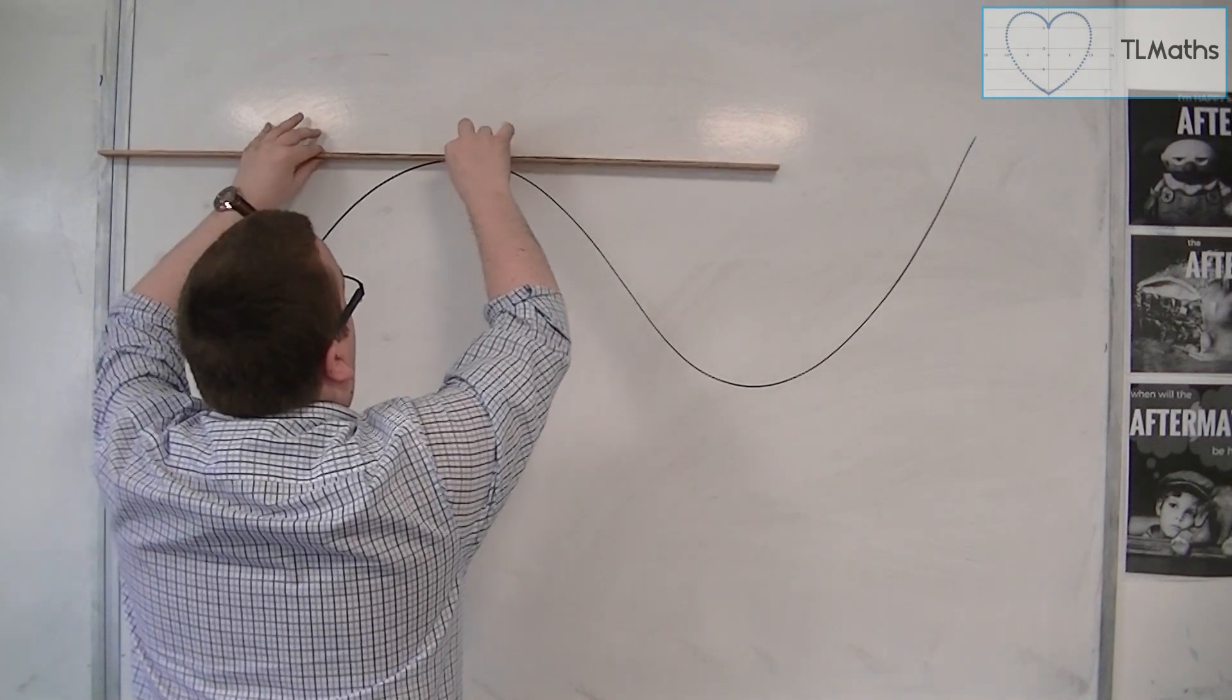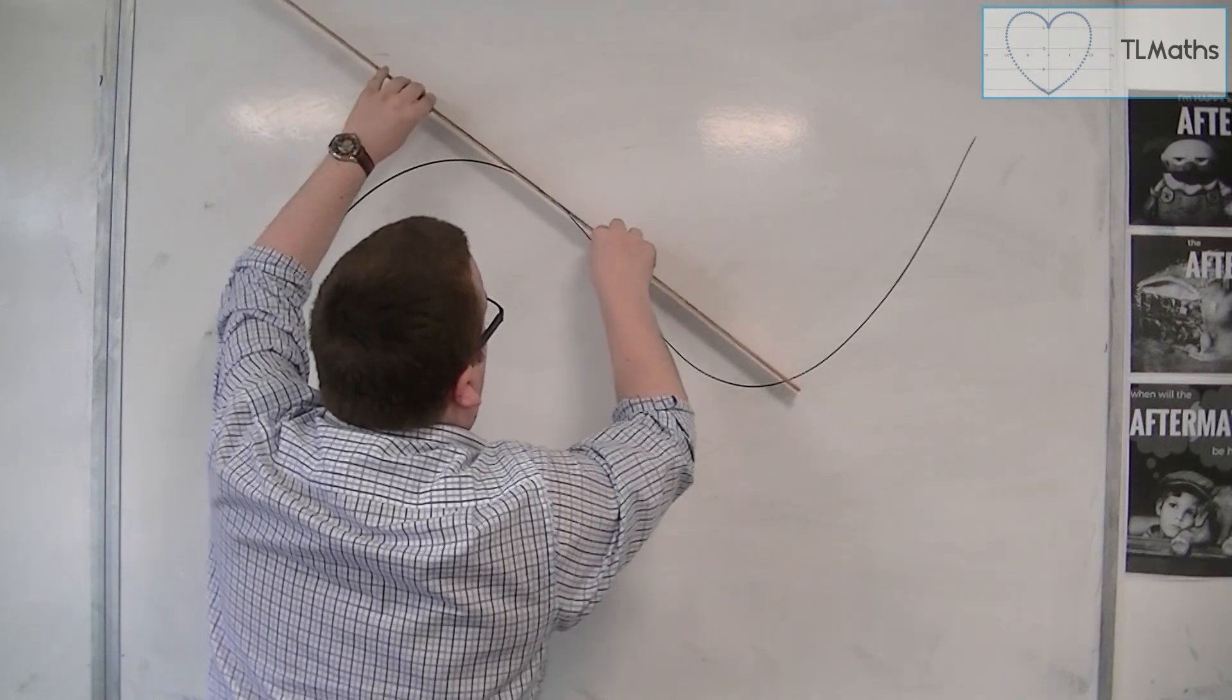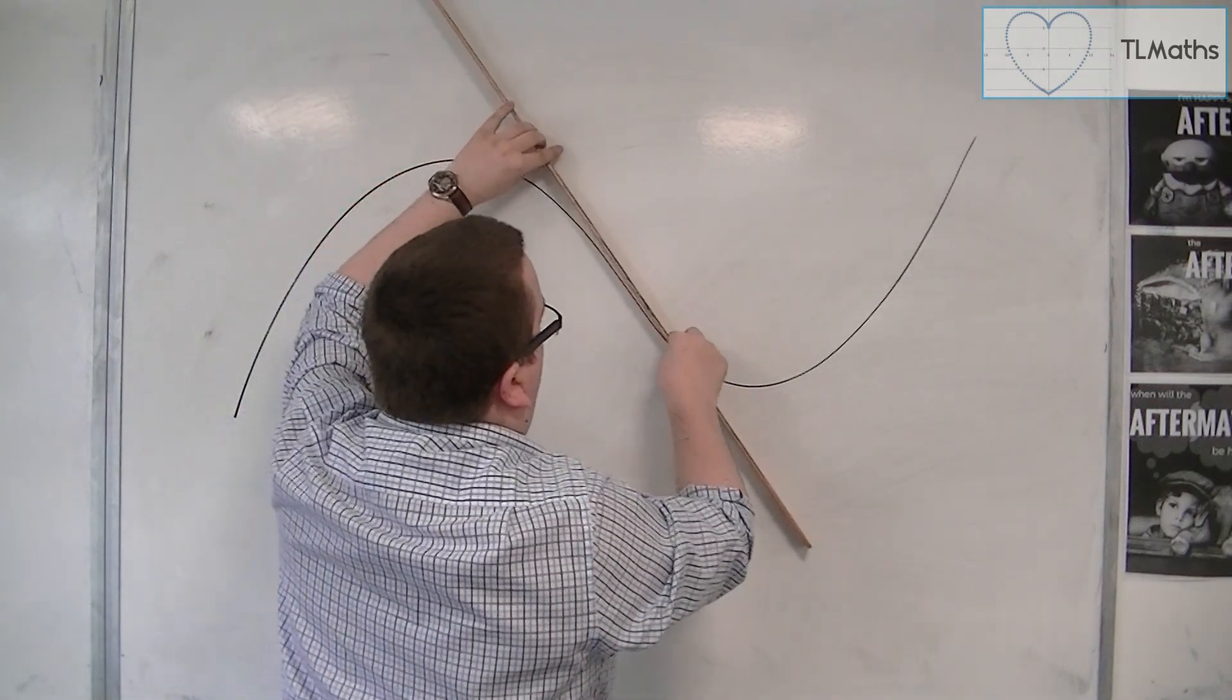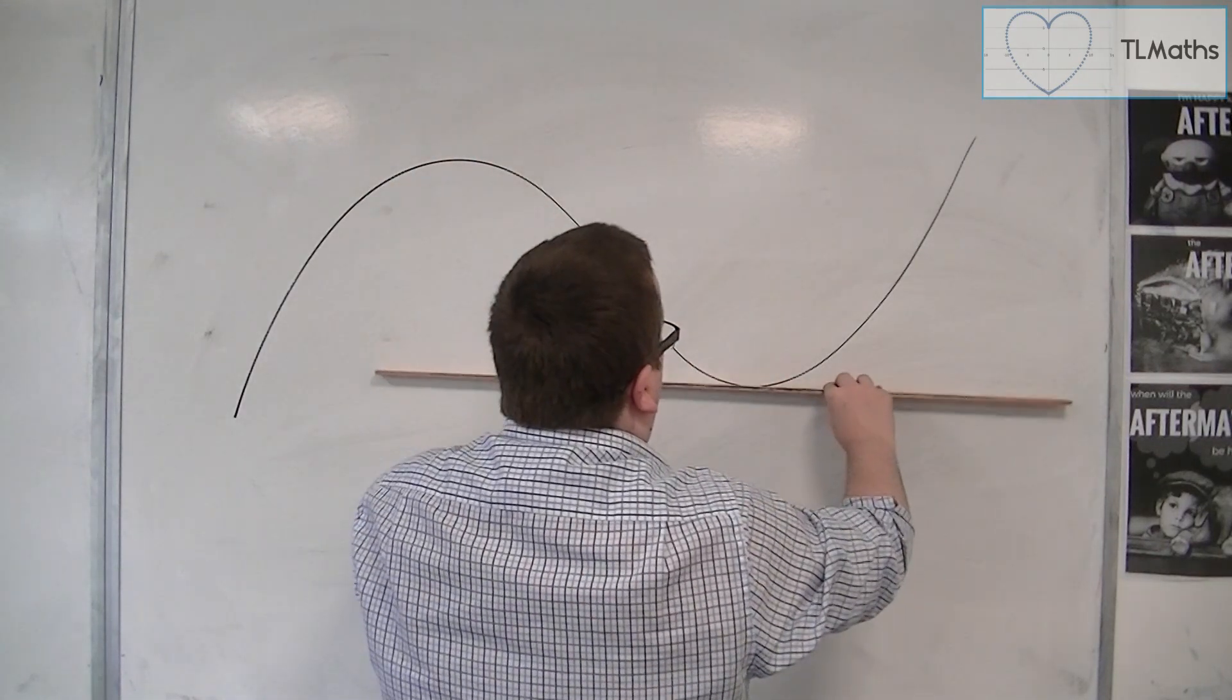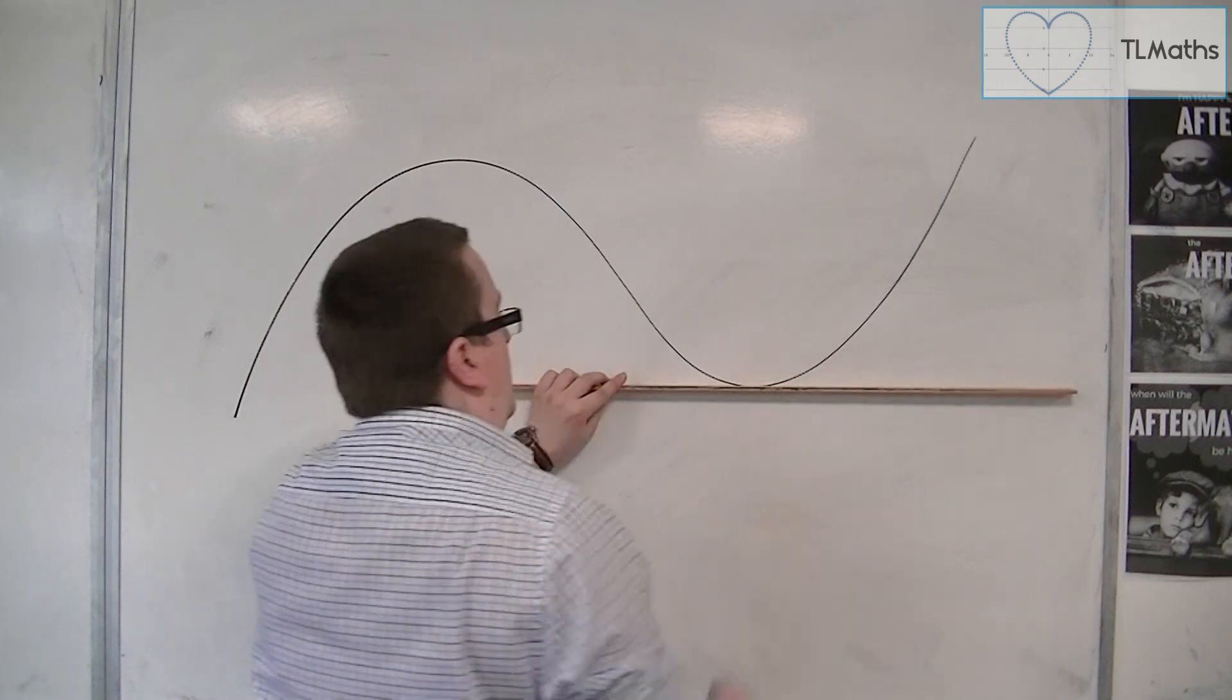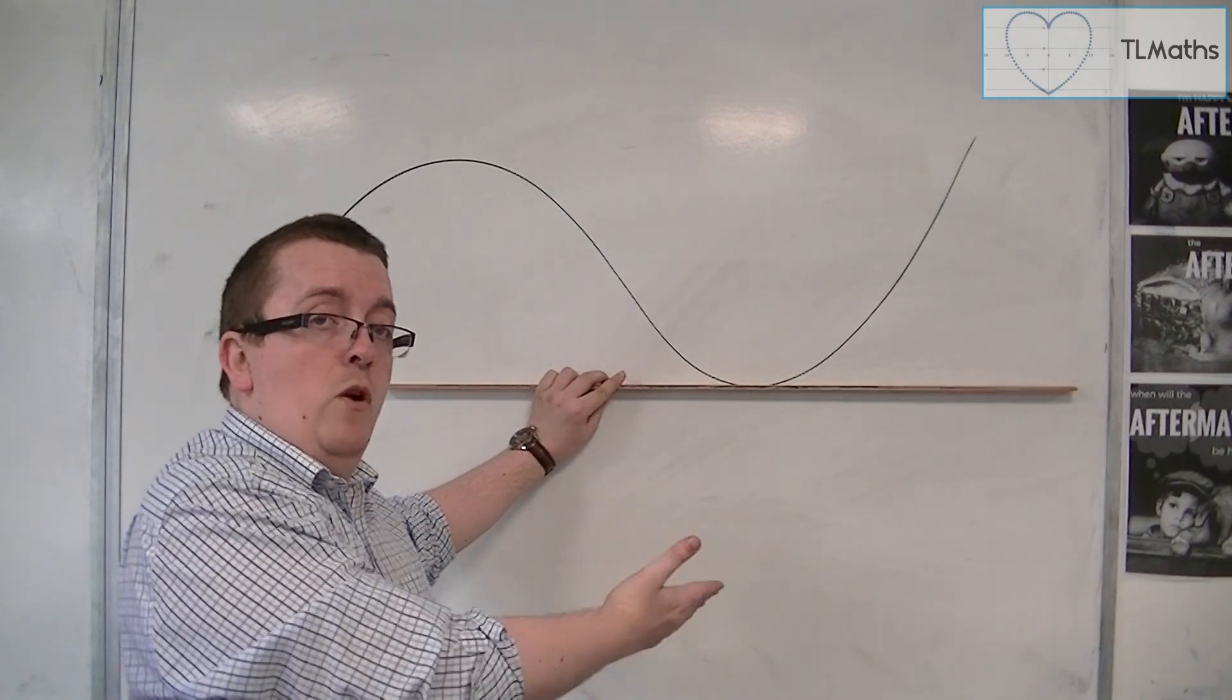And then when we go further along, we get negative gradients, and so the curve is decreasing. And then once we get along to here, we will find ourselves at another turning point and our line will be horizontal and our dy by dx will be zero again.